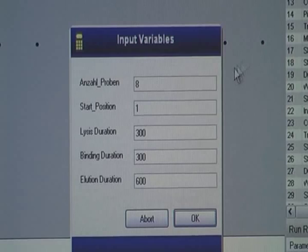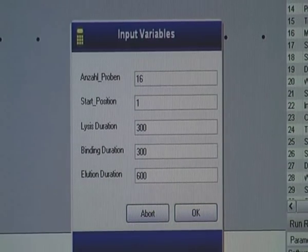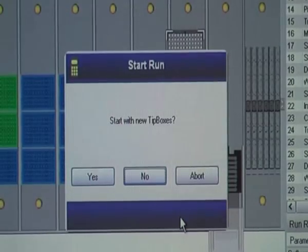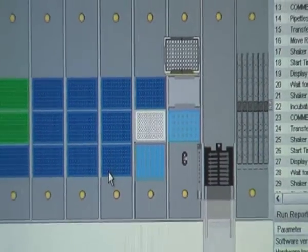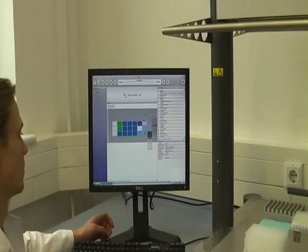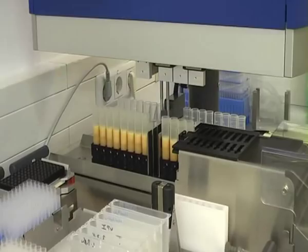After pressing the play button, a series of questions appear. Here, you can enter the number of samples, 16 in this case, and decide whether you would like to start the run using new tip boxes. After initializing the instrument, the automation steps can begin.